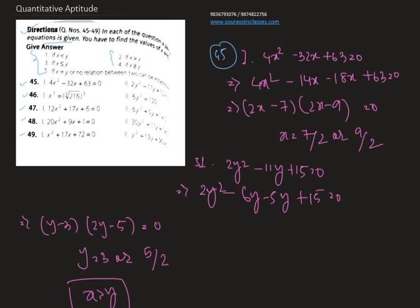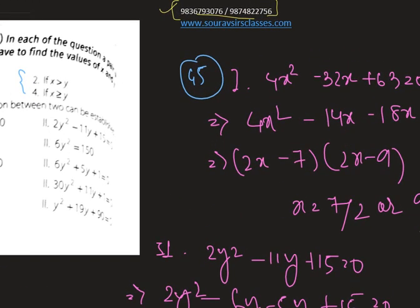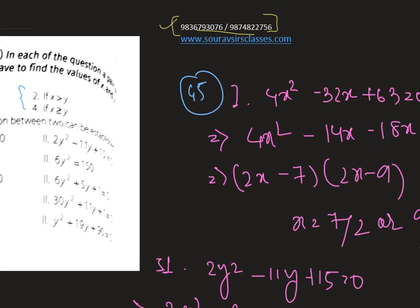We have solved all the questions and that's all for today. To know more about quantitative aptitude, you can join us or drop a message on WhatsApp at 9836793307 or 9874822756. You can also check our website at www.stardustsclasses.com. Thank you very much.